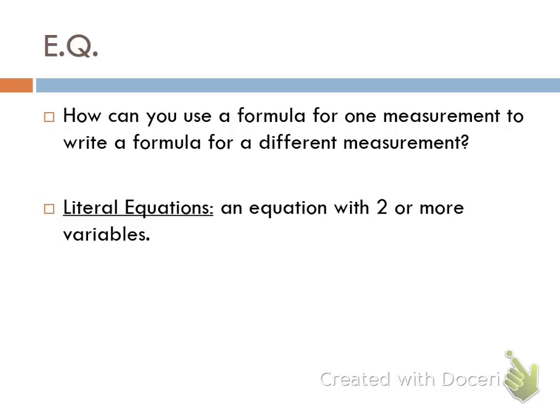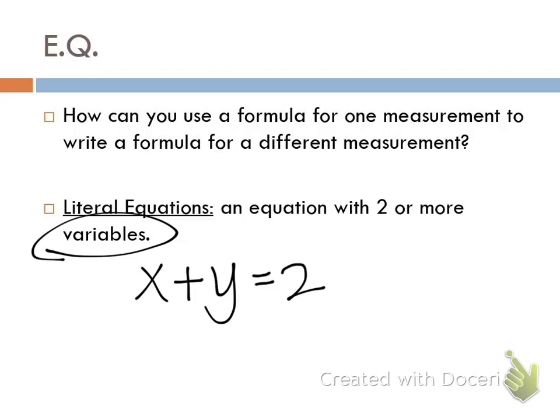But we're going to be looking at literal equations. Here's your definition — I want you to write this in your notes: a literal equation is an equation with two or more variables. Variables are letters, so an equation with two or more variables would be something like x plus y equals 2. That would be an example of a literal equation.